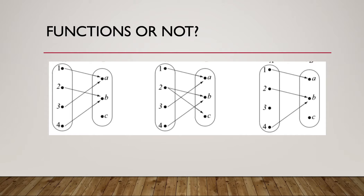Let's try a couple of other examples. We just want to go through these and answer yes or no — are they functions or not? We'll map out the points and make sure that our x's are different. On my first problem, I have 1 going to a, 2 going to b, 3 going to a, and 4 going to b. In order for it to be a function, you just need your x values to be different. When we look at the x's — 1, 2, 3, and 4 — they're all different. So yes, this is a function.